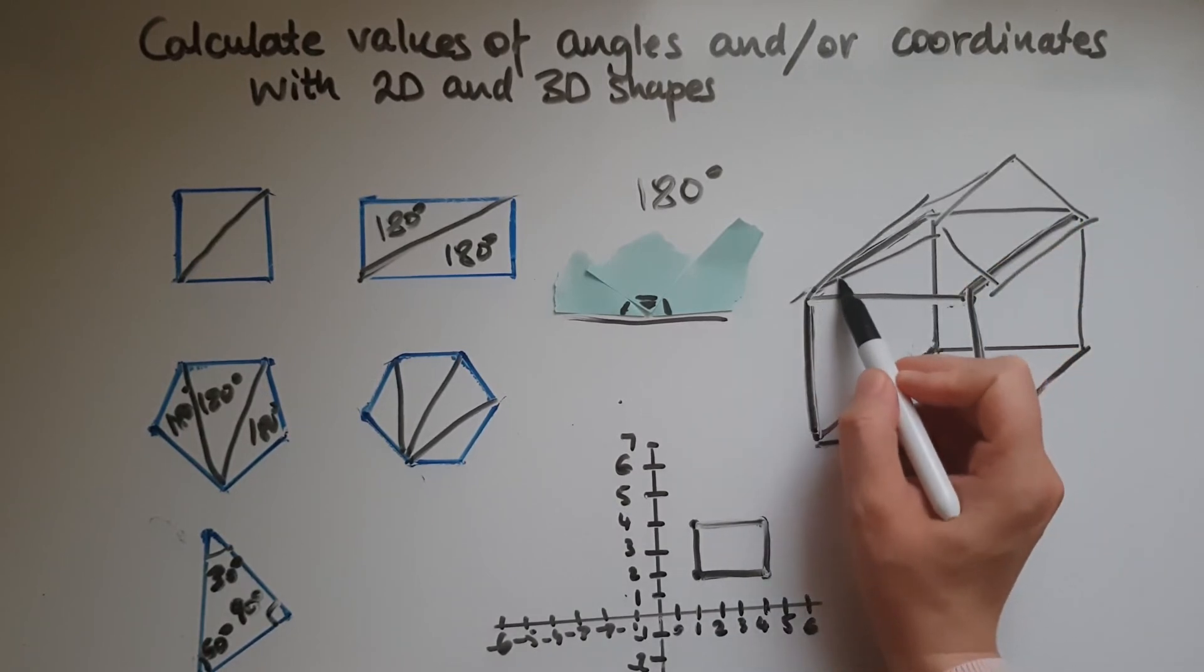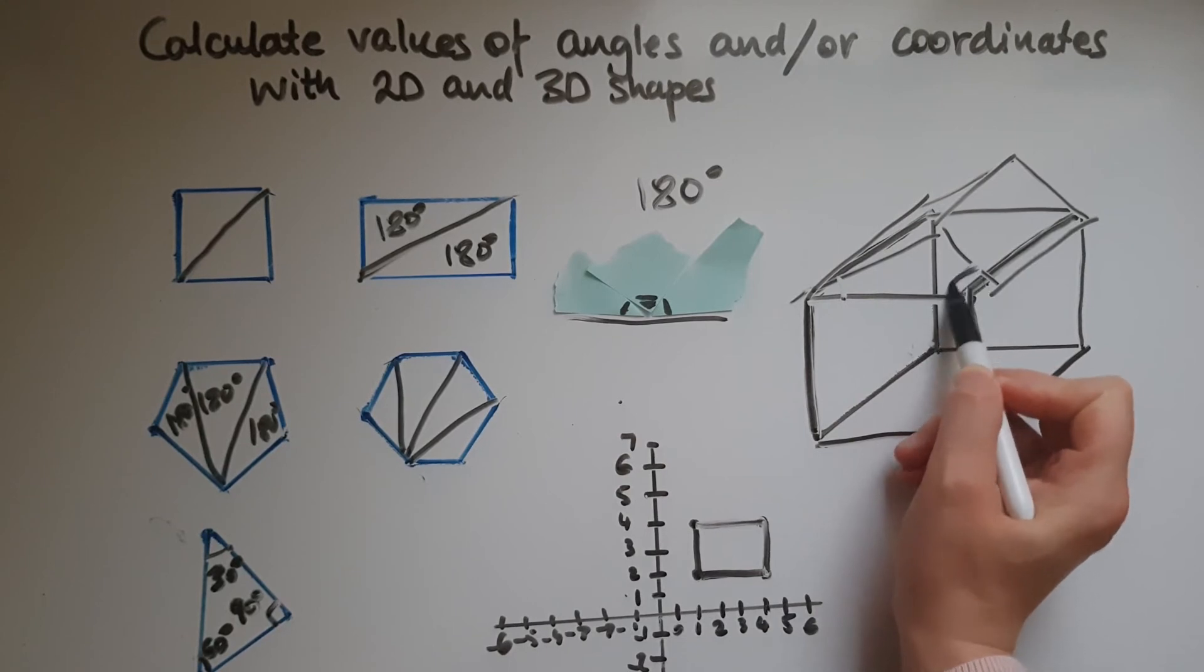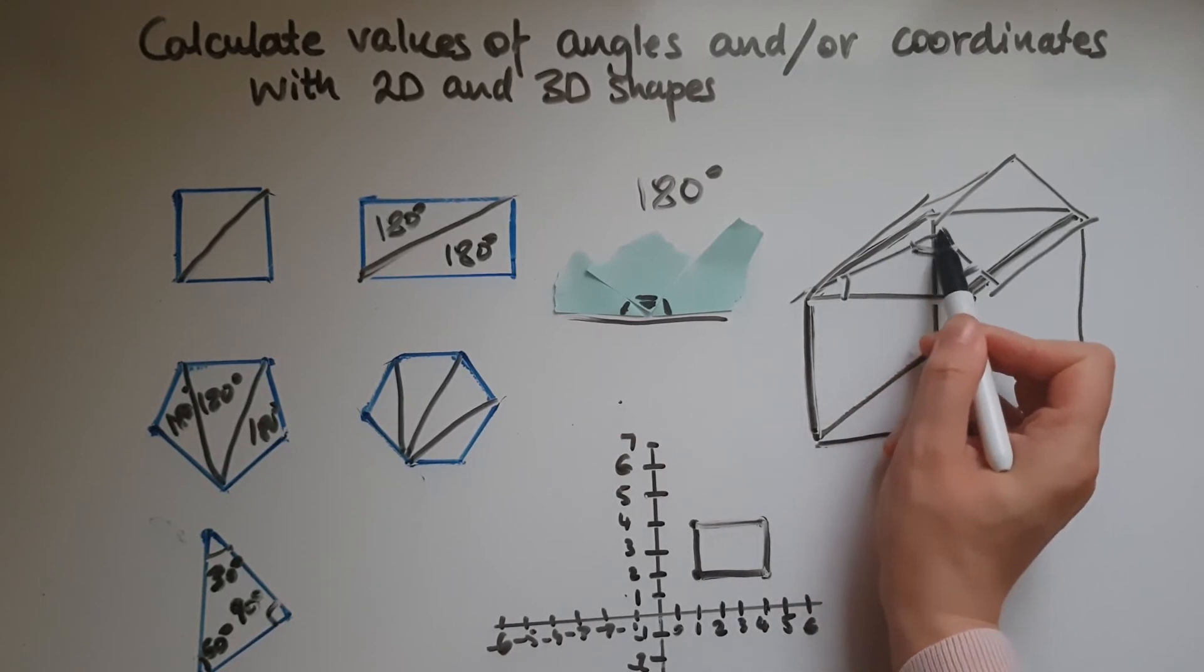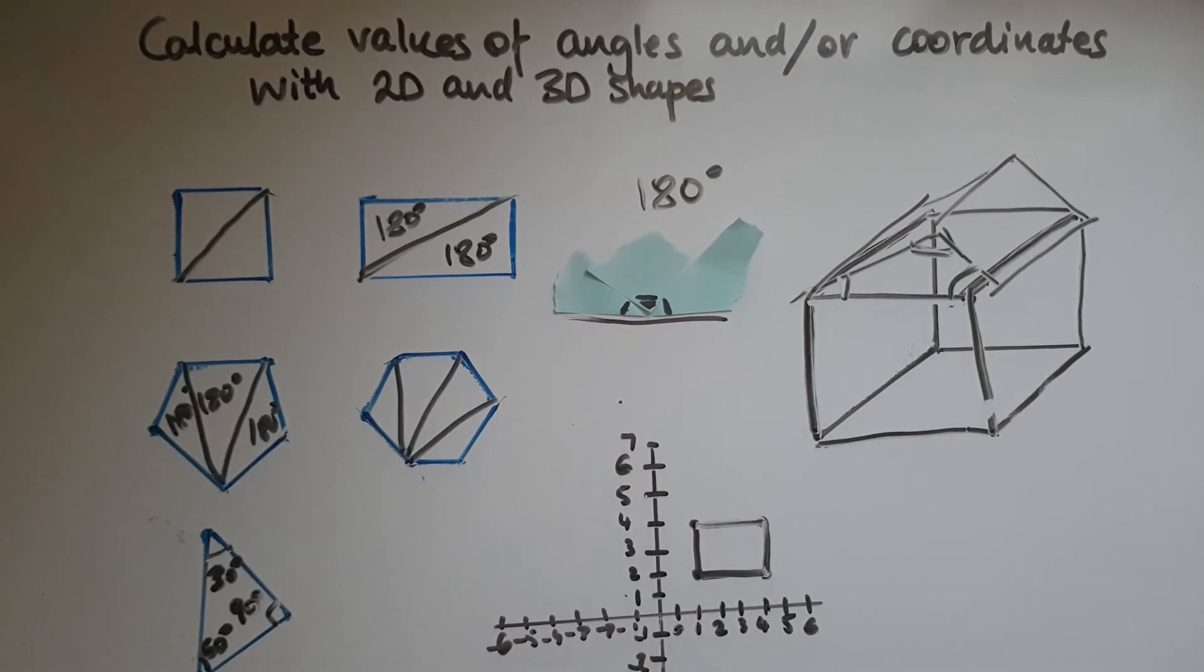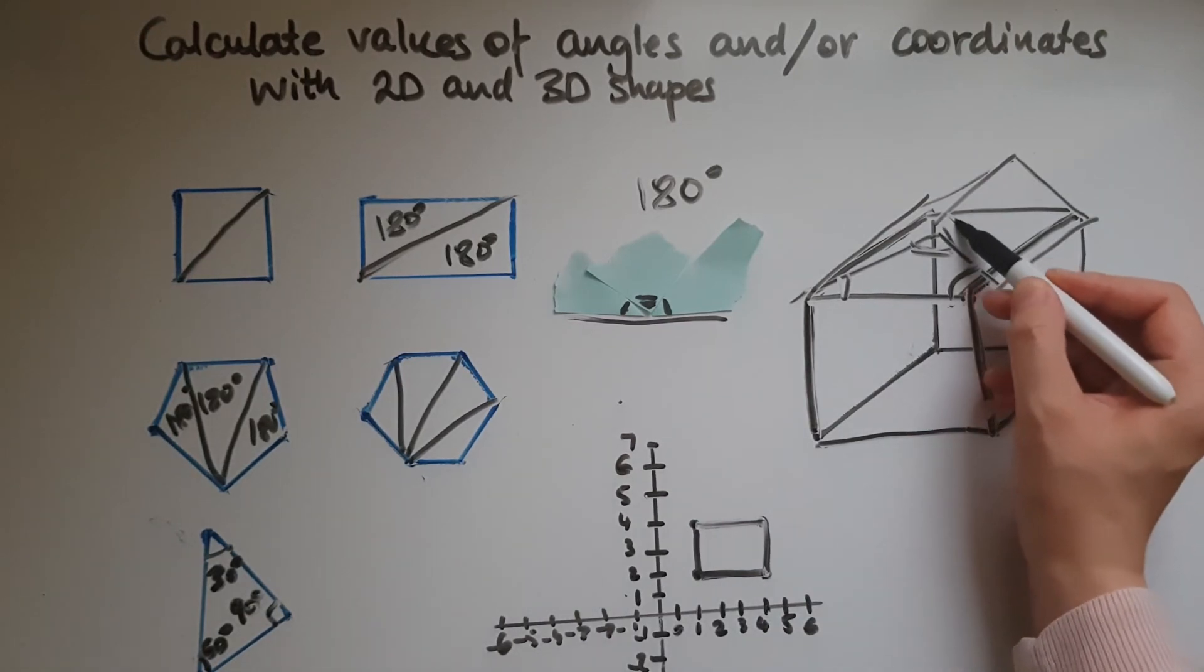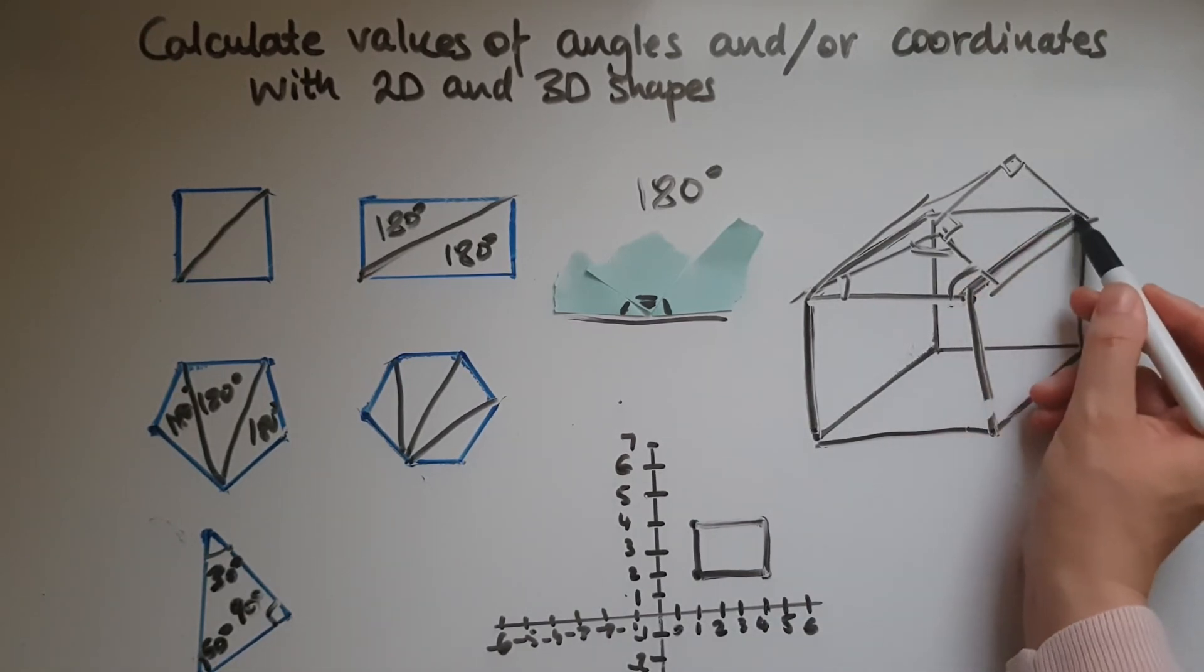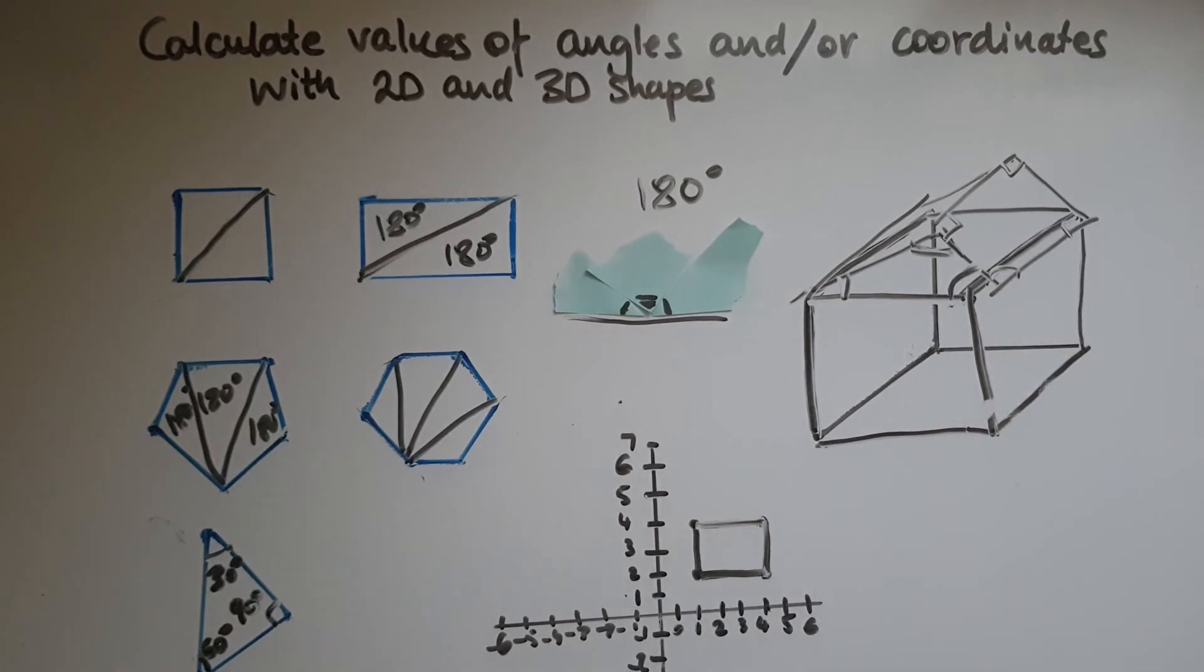And by knowing these two angles, you should be able to work out what this angle here is as well. And you know that this is 90 degrees and this is 90 and so on. So we're using the knowledge of the 2D shapes when it comes to working with 3D shapes.